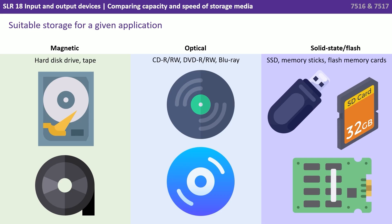We have magnetic, which consists of hard disk drives and tapes; optical, which includes CDs, DVDs and Blu-ray; and solid state, which covers SSD drives, memory sticks, flash cards, etc.